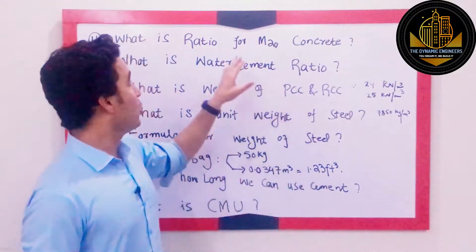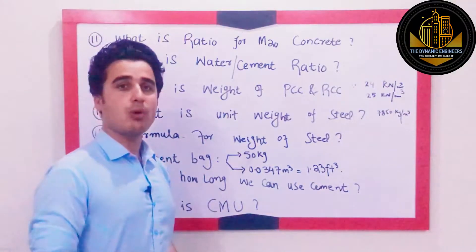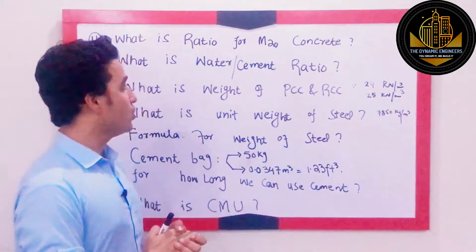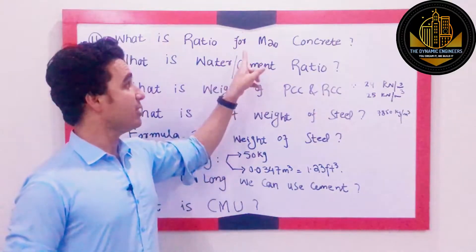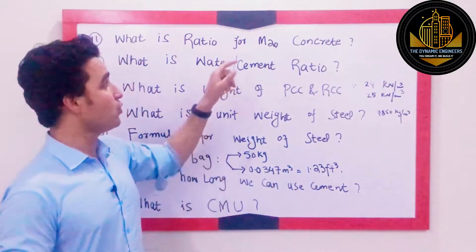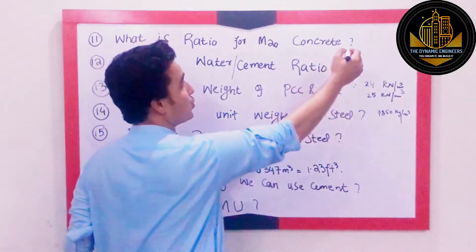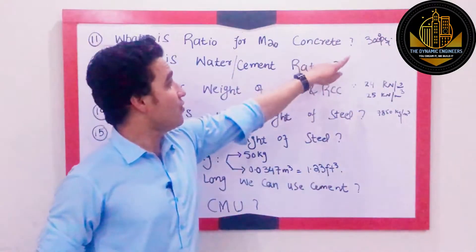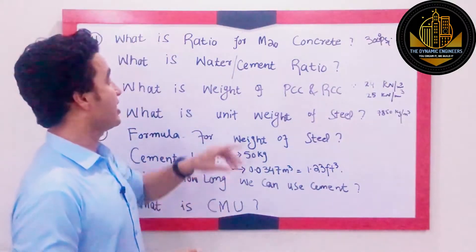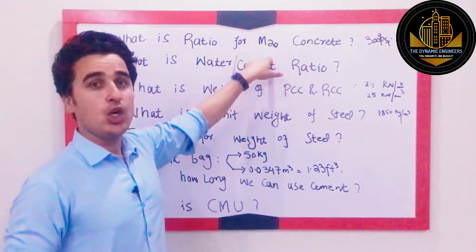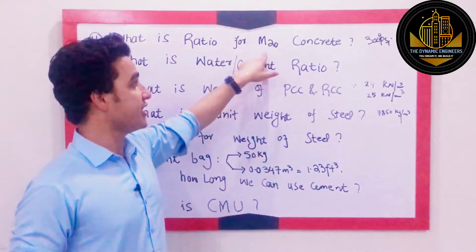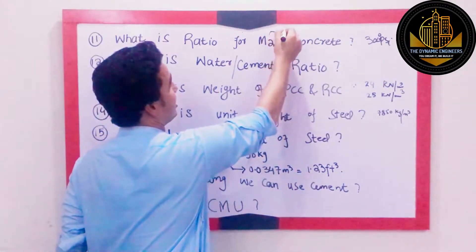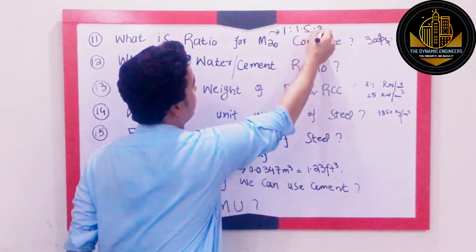Question number 11: What is the ratio for M20 concrete? You will most probably be asked about different ratios of concrete like M15, M20, M25. M20 is important because it has a strength of 20 megapascal, which is equal to 3000 psi. The ratio for M20 concrete is 1:1.5:3.